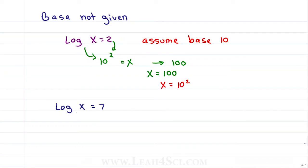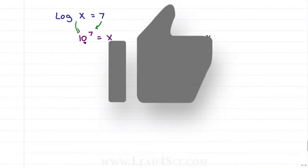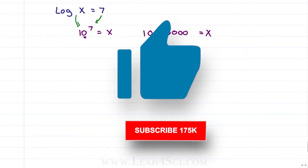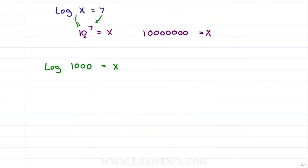What about log of x equals 7? Ask yourself: 10 to the power of 7 equals what? x equals 10 to the 7th — if you have to spell it out, put a 1 and count seven zeros. So far so good? If yes, give this video a thumbs up. Now, what if I flip it — what if I ask you to solve log of 1000 equals x? Same thing.